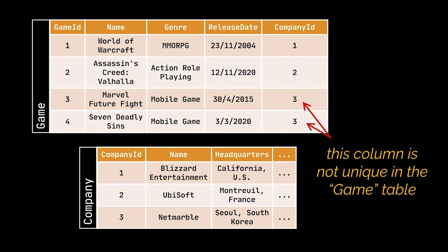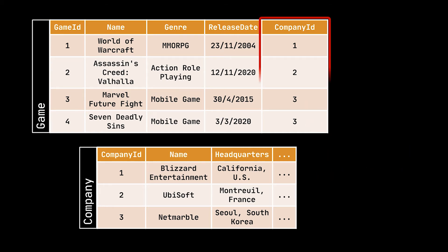Additionally, in the game table, this column is not identified as unique, and hence the same company ID can belong to multiple games. The uniqueness in the game table is ensured by the game ID column, not the newly added one. The company ID column we added is still a key, but not a primary one — it is referred to as a foreign key.